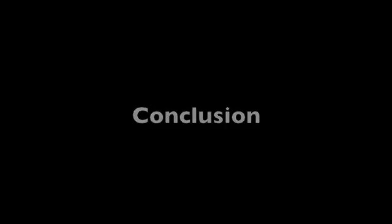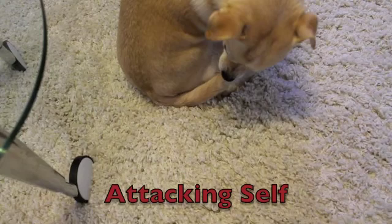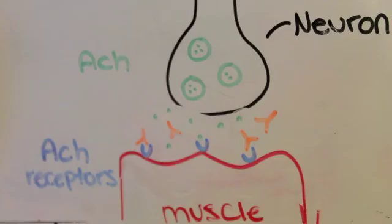In summary, myasthenia gravis is an example of a hypersensitivity type 2 disorder which is characterized by an antibody-mediated attack on the host's own cells. The signs and symptoms of this disease, painless muscle weakness and fatigability, show the effects of the antibodies preventing acetylcholine from reaching its target receptors on the muscle fiber.